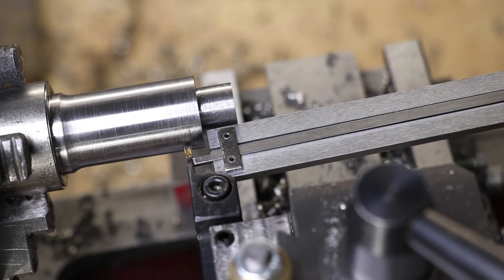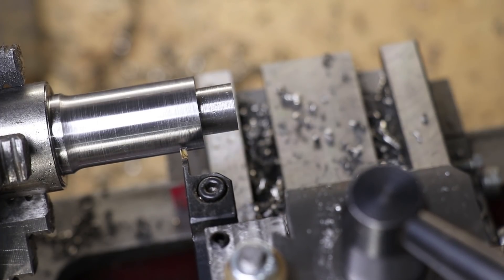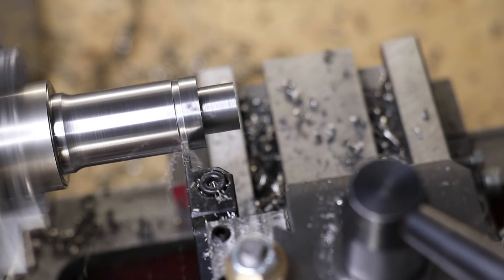Next I want to part the cap from the main body. I'll start by parting it off in the lathe and I'll finish it off by hand.